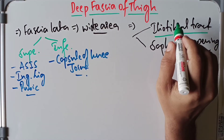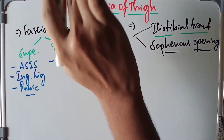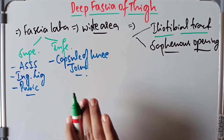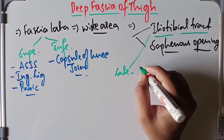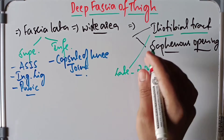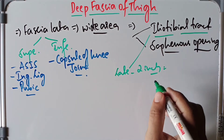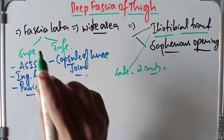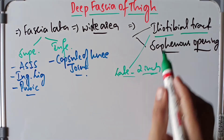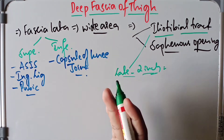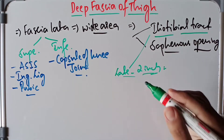Now we will go into detail about the iliotibial tract. The fascia lata is thickened on the lateral aspect of the thigh to form a band two inches wide. On the lateral aspect, it forms a two-inch-wide band, and this wide band is called the iliotibial tract.